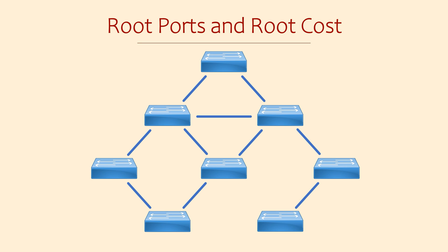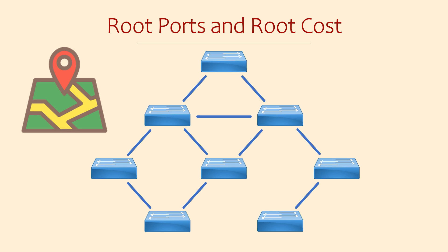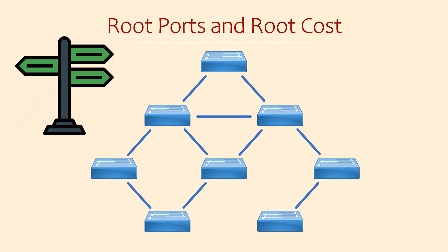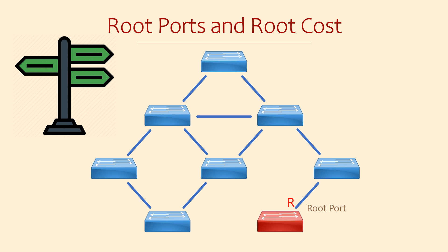Using the information learned from BPDUs, a switch will build something like a map of the network — more like signposts pointing the way to the root bridge. Spanning Tree is all about finding the best path to the root bridge. A switch that received a superior BPDU received it on a particular port, so it knows that this port points the way through to the root bridge — it names this port the root port. All switches have a single root port. The only exception is the root bridge, which doesn't have a root port because it is the root bridge.